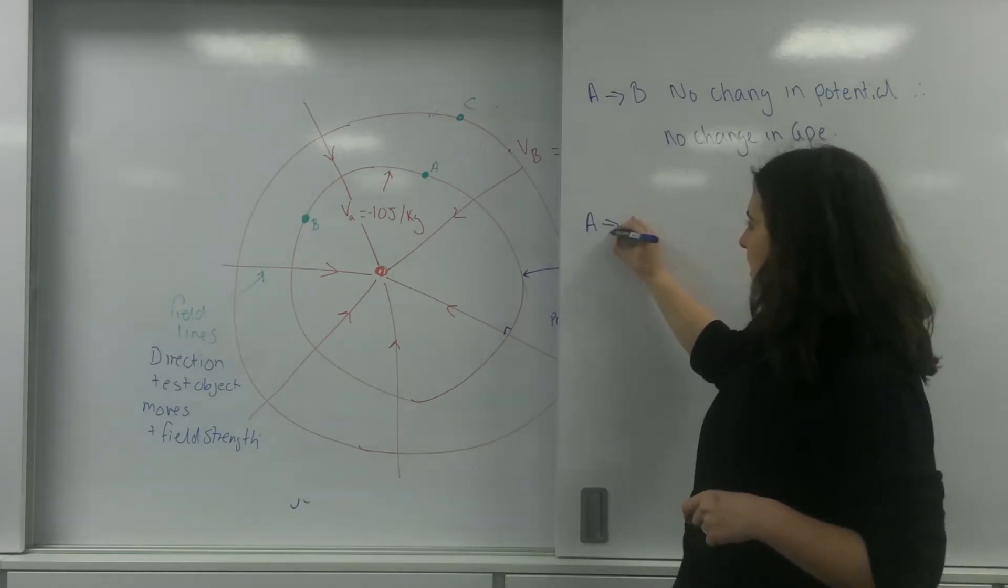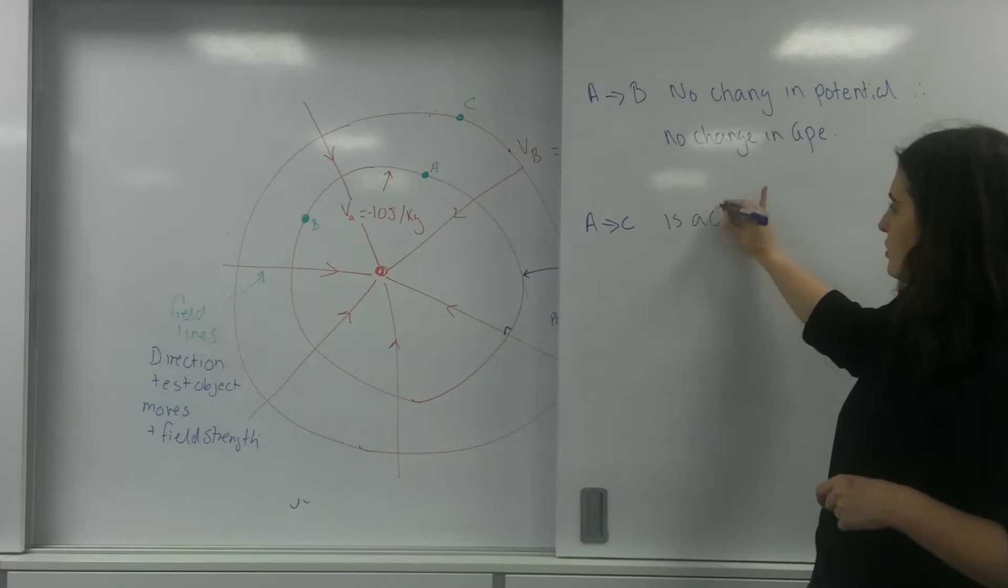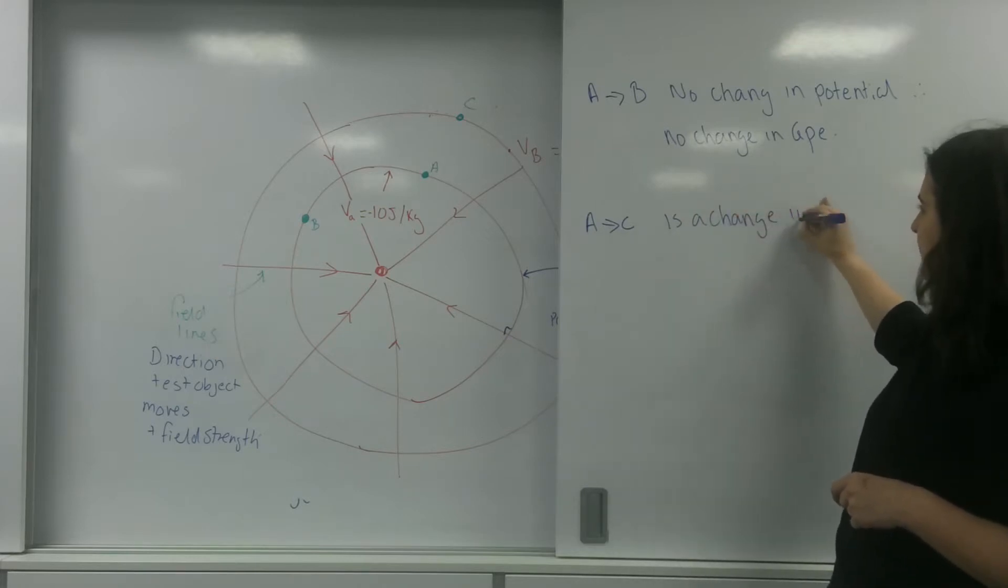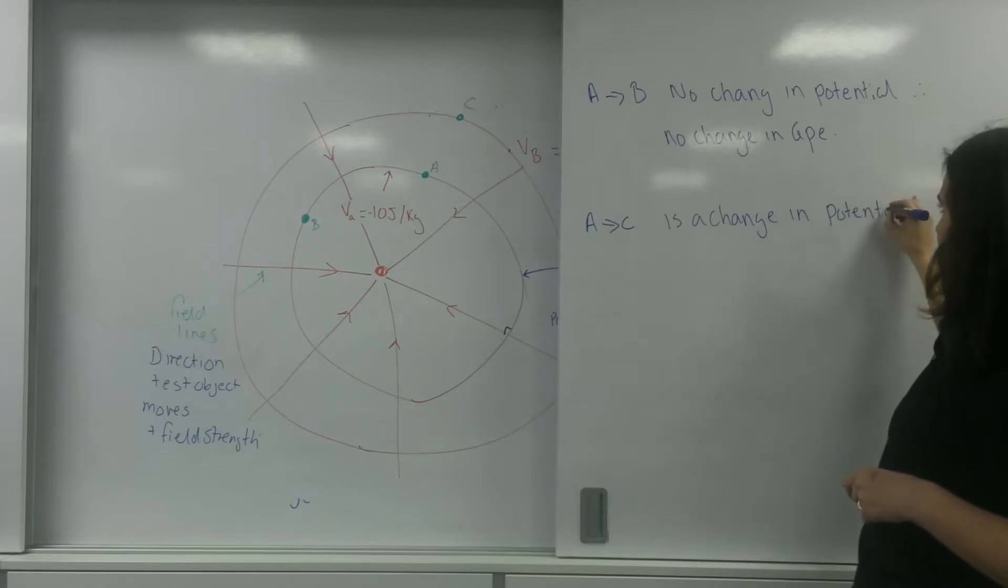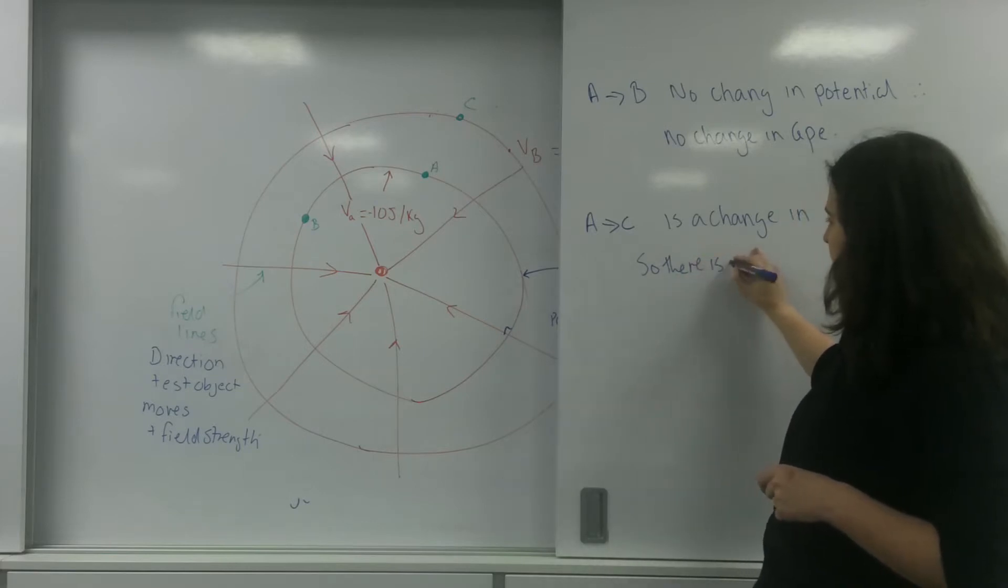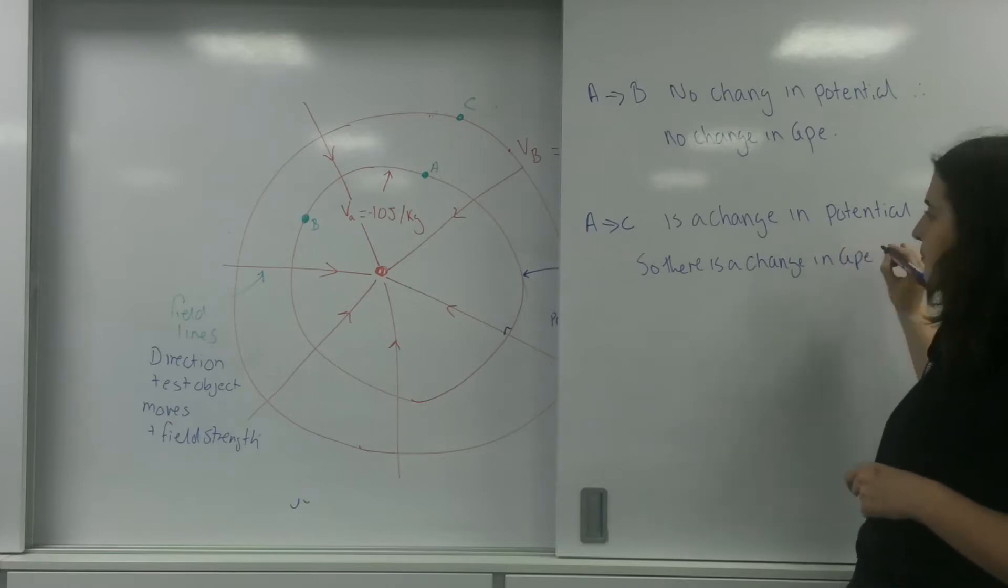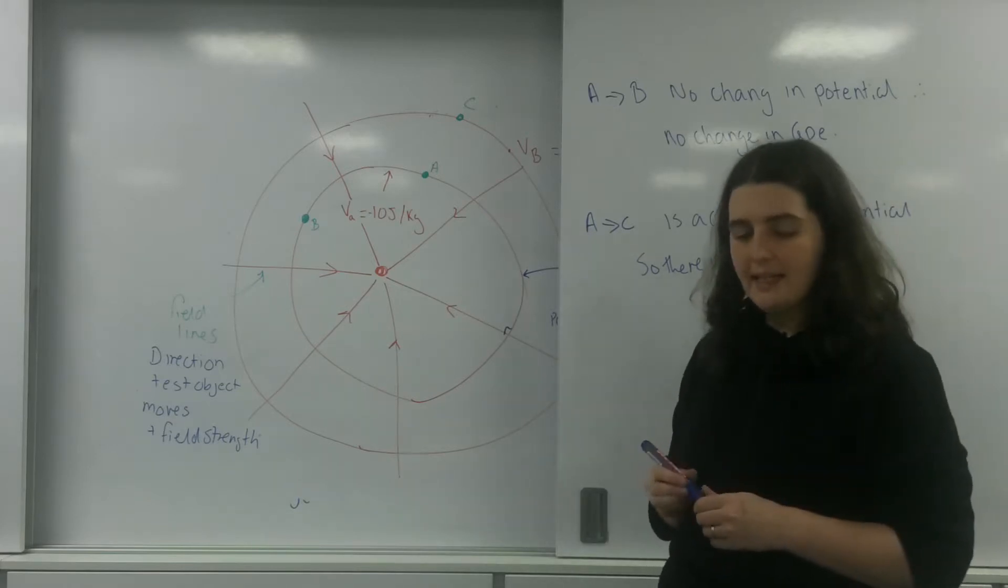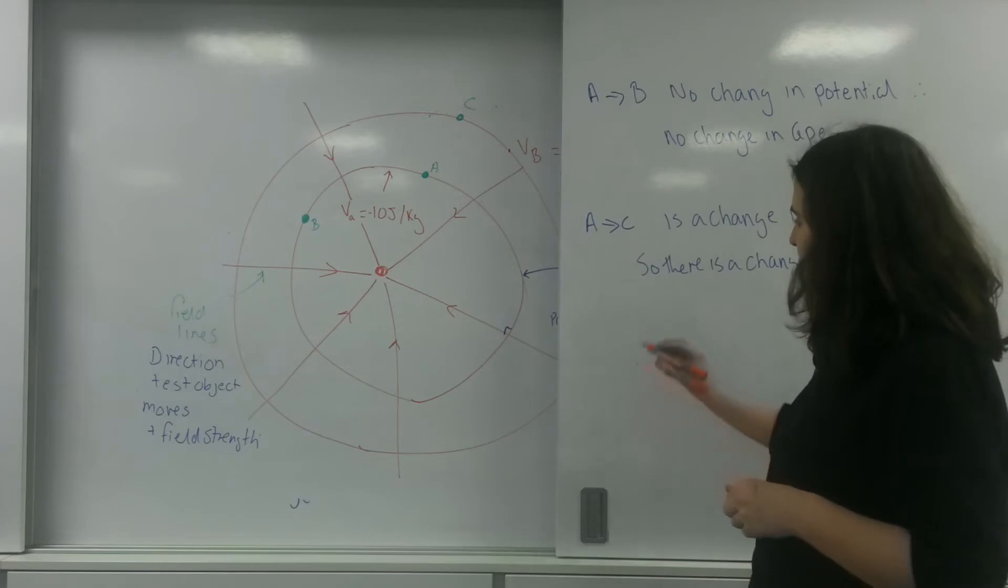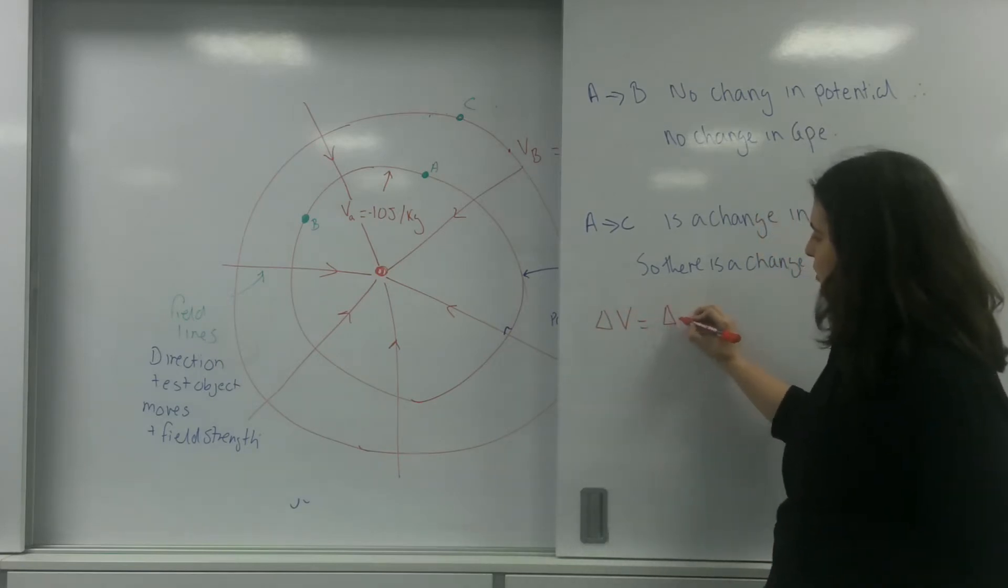Now, if I was going from A to C, there is a change in potential, so there is a change in GPE. And we can, of course, calculate that by using this formula here, that the change in potential equals the change in energy over the mass of the object.